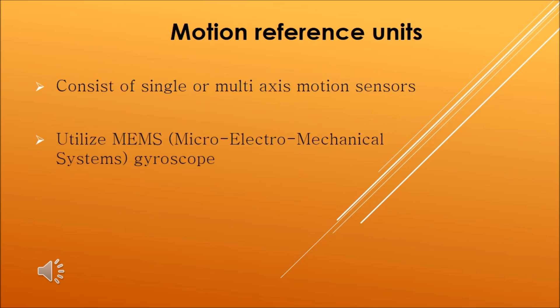Motion reference units are a kind of inertial measurement unit with single or multi-axis motion sensors. They utilize MEMS gyroscopes. Some of the multi-axis MRUs are capable of measuring roll, pitch, yaw, and heave.